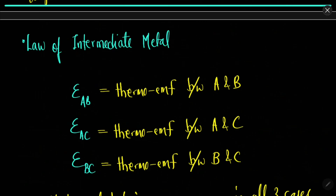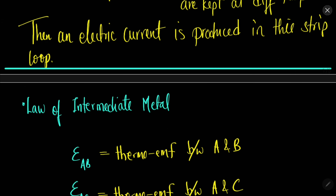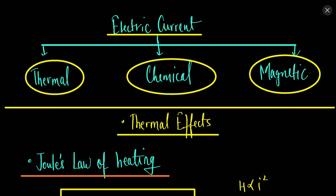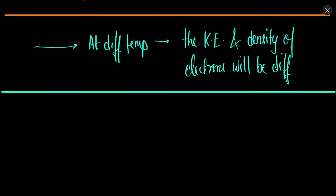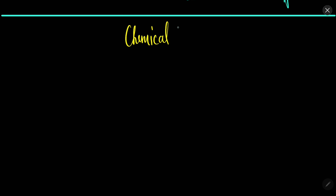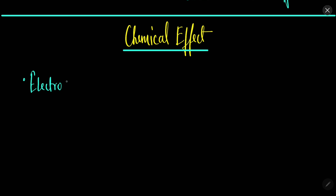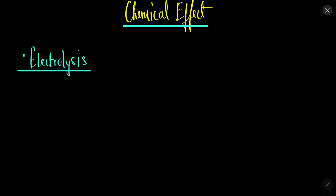Now let us start with the very important concept which is the chemical effect of current. We have done the thermal effect in which we talked about heat. Now let us talk about the chemical effect of current. The chemical effect can be properly understood by understanding the concept of electrolysis. Electrolysis is a process in which an electrolyte is there and the anode and cathode rods are there in which charge ions flow.